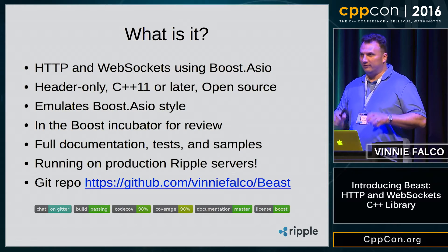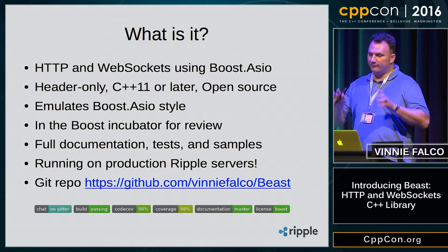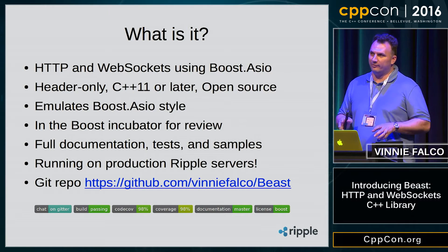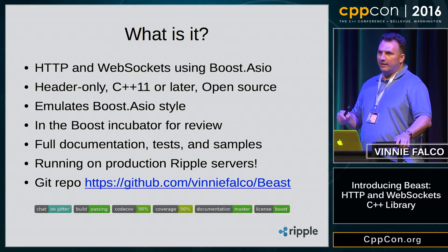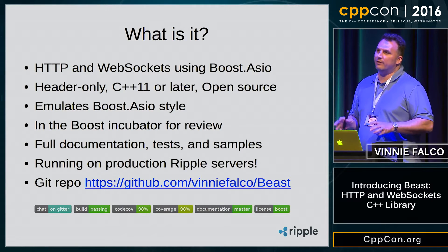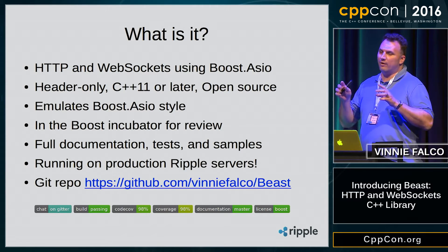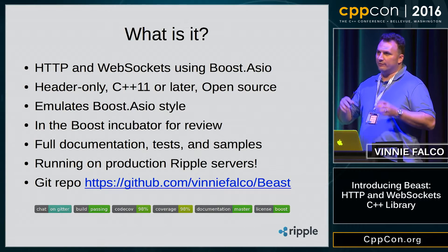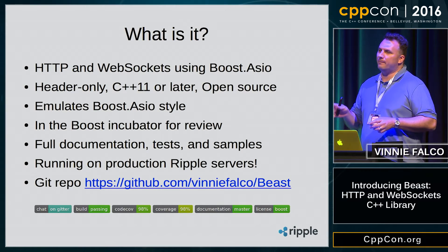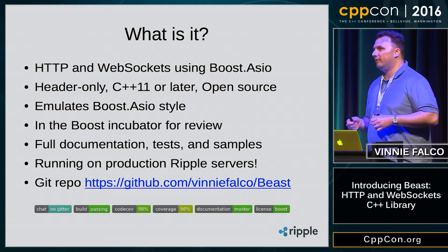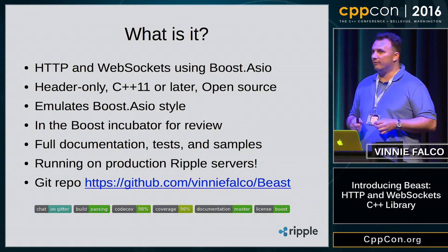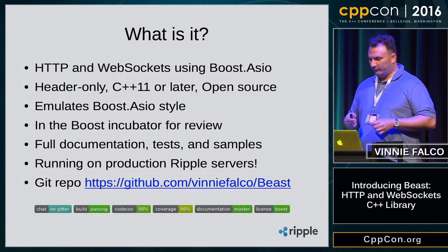There's documentation, tests, and sample code, including a fully functional web server and WebSocket server. The good news is it's production-ready code — it's running on Ripple production servers. There are a few other third parties shipping products using Beast, so I think it's very robust. I haven't heard any bug reports yet, though surely they'll be coming soon.